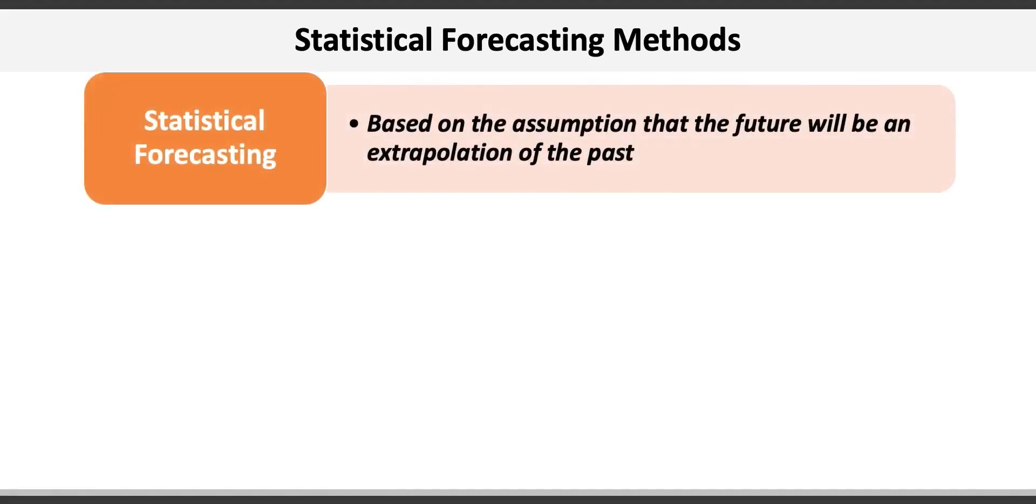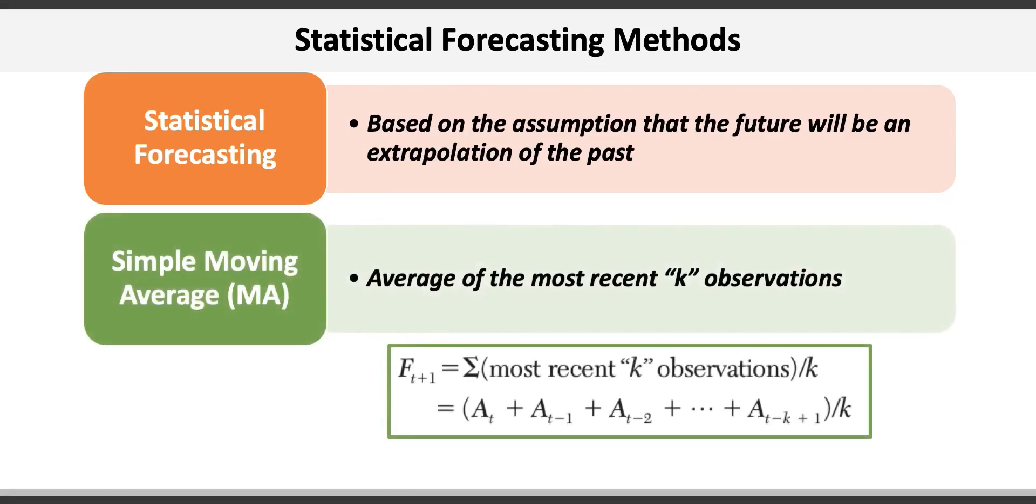Operations managers engaging in forecasting usually subject the time series data to some basic statistical forecasting methods. Statistical forecasting assumes that the future will be an extrapolation of the past. We need to make this assumption because otherwise historical time series data would be useless. A very common statistical forecasting method is the good old simple moving average, which takes an average of the most recent number of observations.